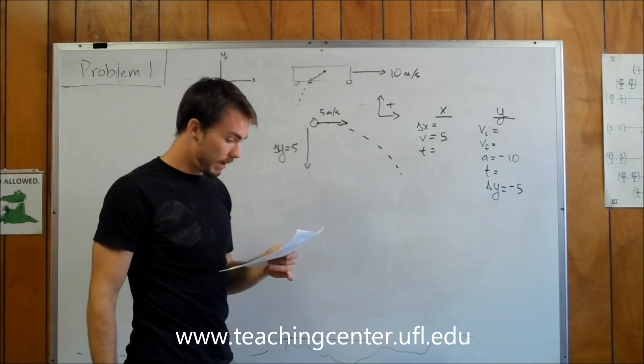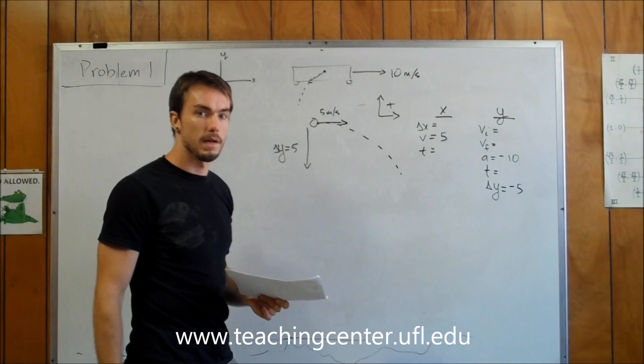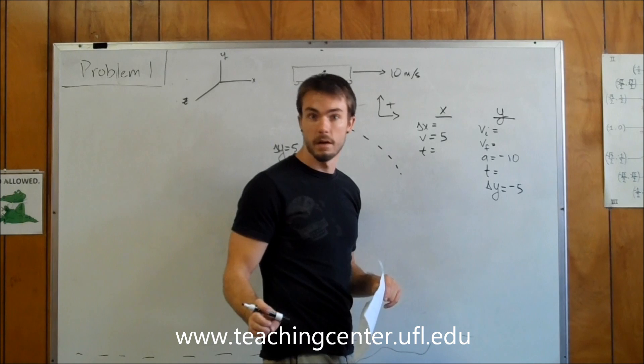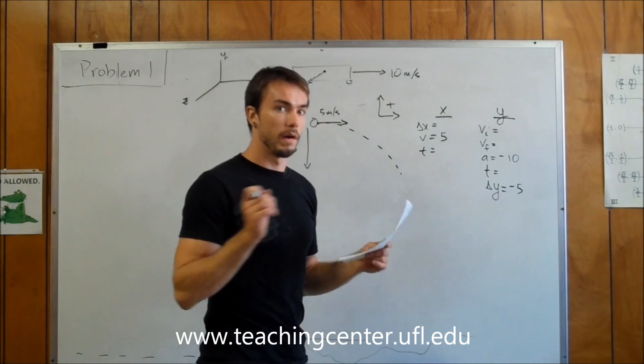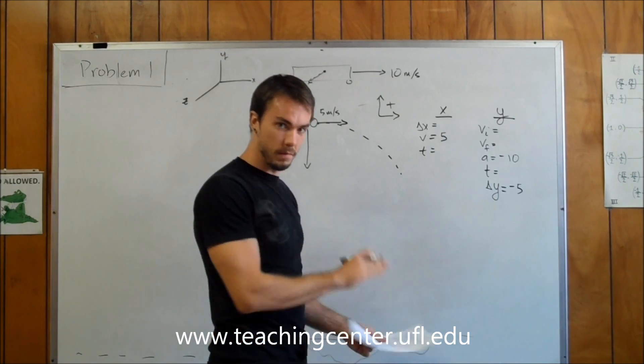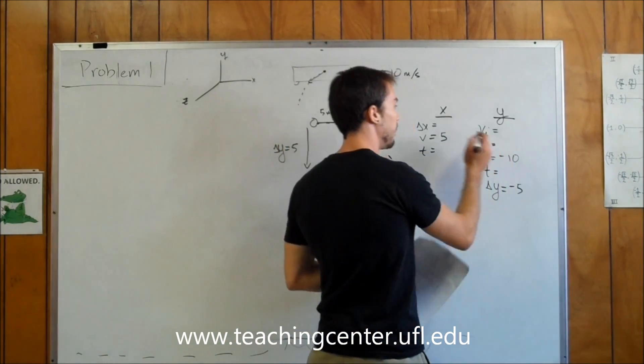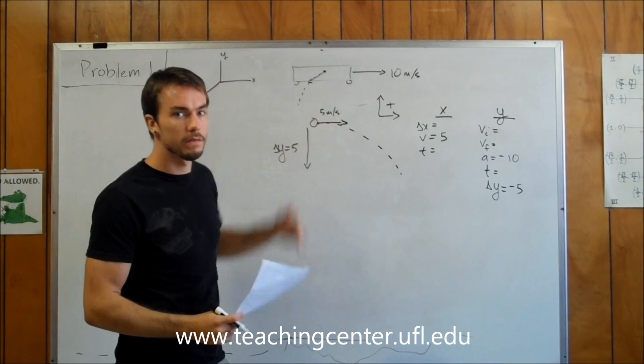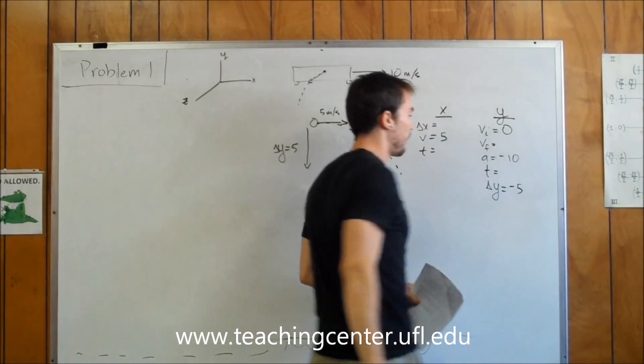We know our acceleration is downwards, therefore negative 10. I'm going to use 10. I recommend you use 9.8, but most of the time professors use 10, so this will give us the exact right answer. You'll get something very close if you use 9.8. I highly recommend you always use 9.8, but for convenience and to mimic what the professor does, I'm saying gravity is negative 10. Don't forget, if something's thrown horizontally, the initial velocity in the Y direction equals zero.